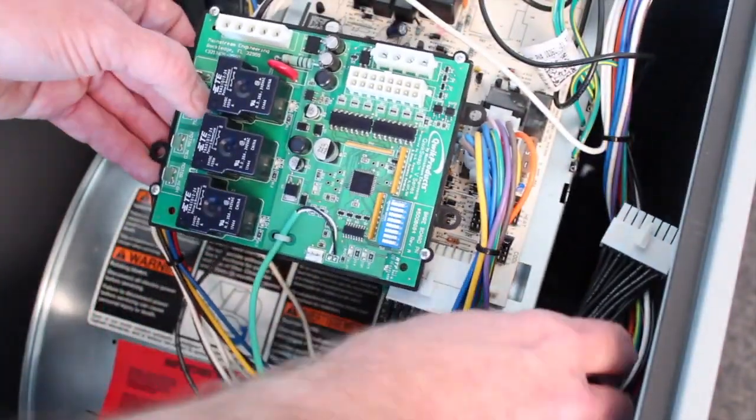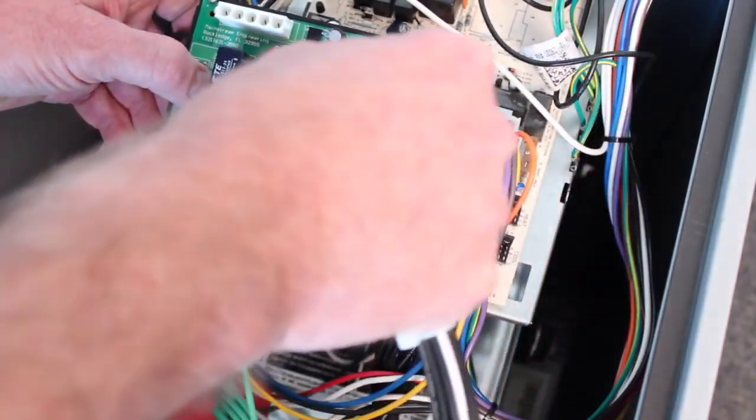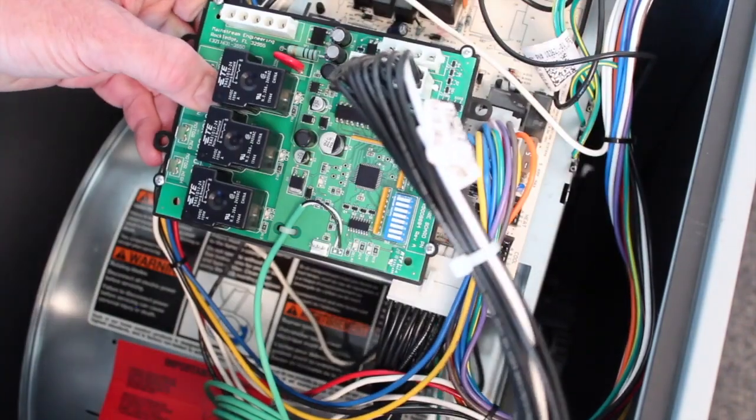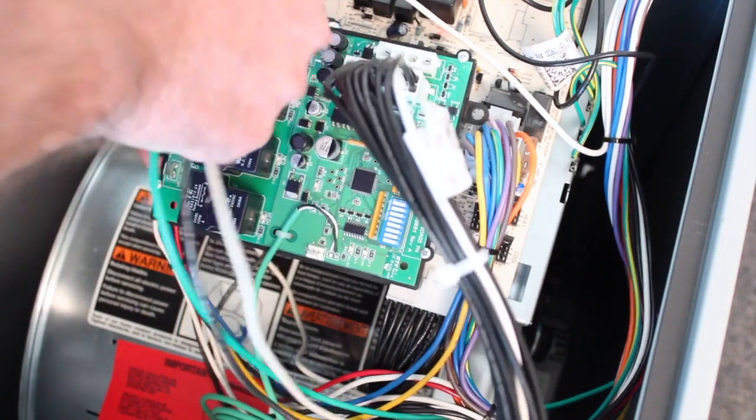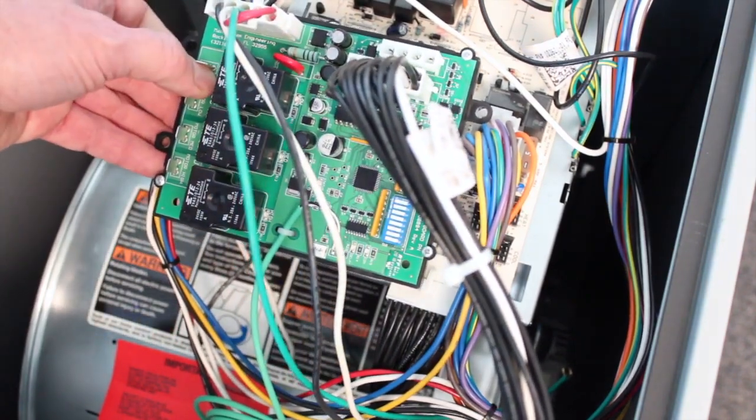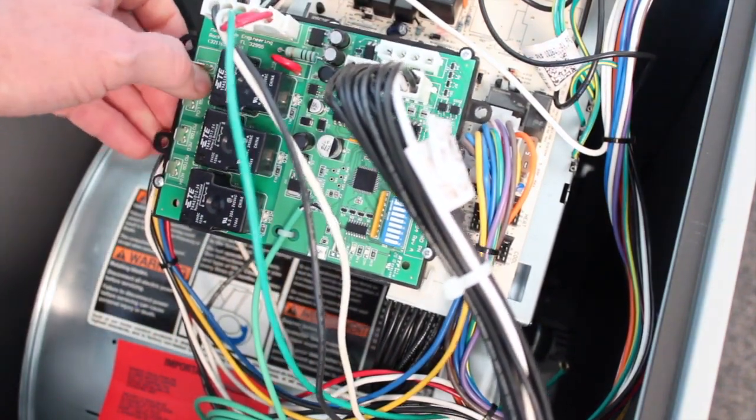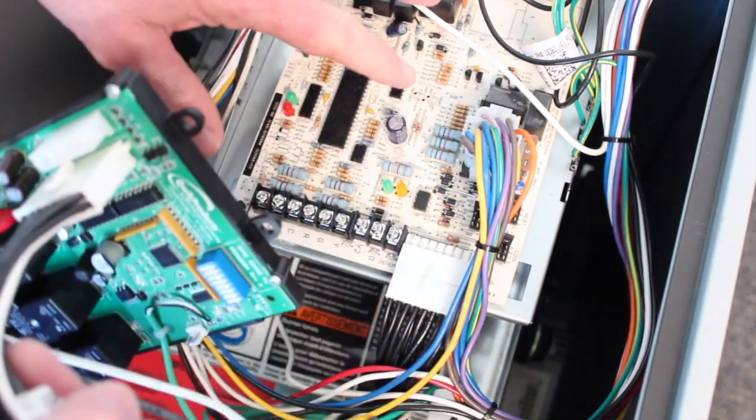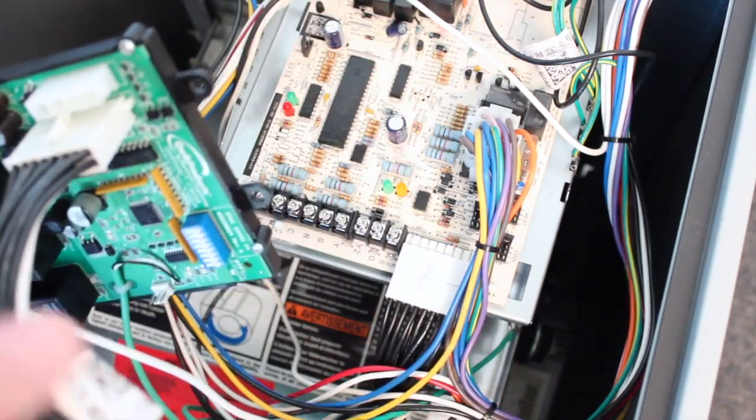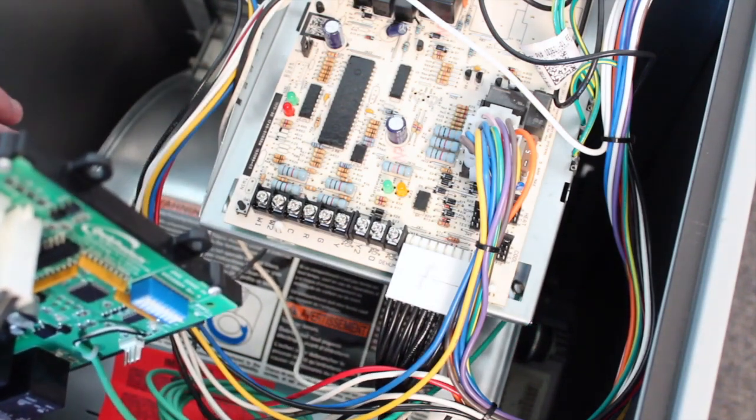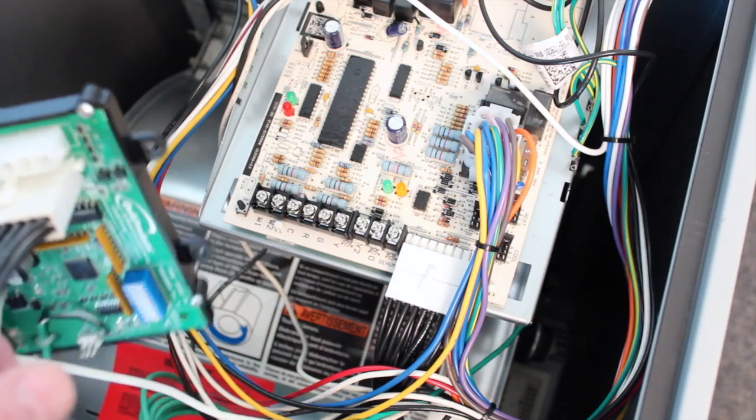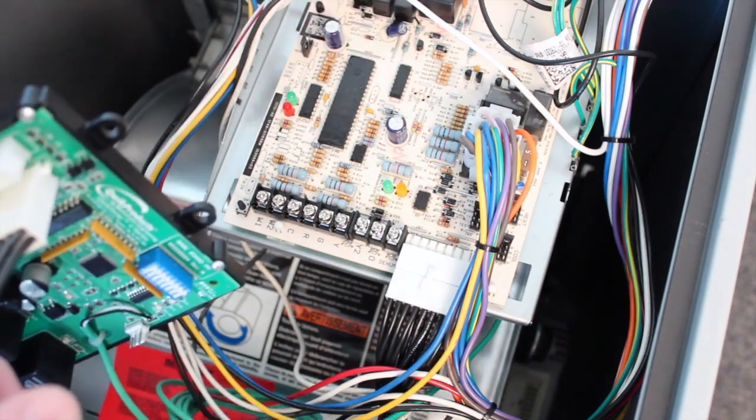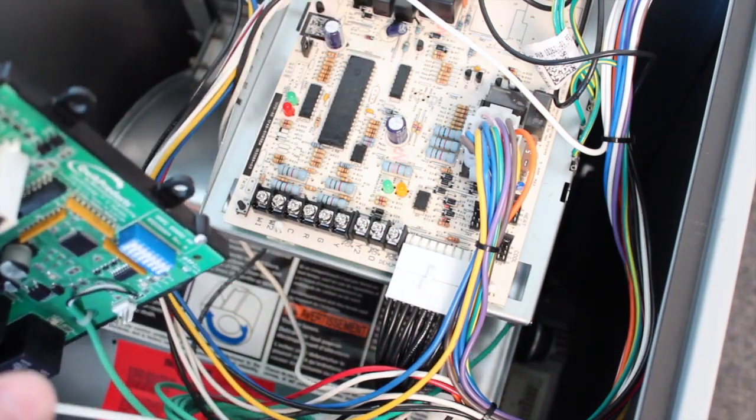Step two is to take the harnesses now and plug them into the QuickSwap board. This is going to allow us to confirm that the QuickSwap board can communicate with the OEM board. As long as it can communicate, then we will proceed with the motor change-out. If it can't communicate, it's very possible that the HVAC control board has been damaged along with the motor.